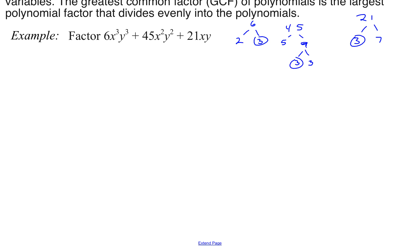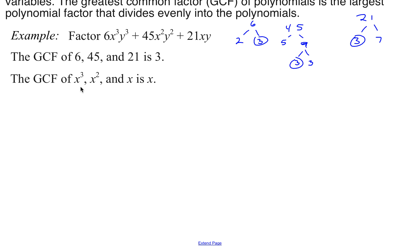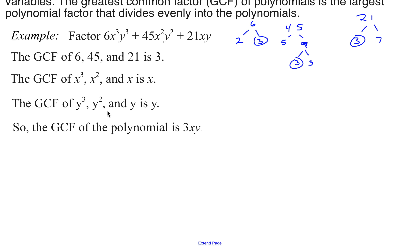What do you see that's common in all three of those terms? They all have a factor of 3, so that's the greatest common factor as far as the coefficients are concerned. Then if we look at the variables, they all have an xy in them. The greatest common factor of the x terms is x, and the greatest common factor of the y terms is y. So we multiply all of those together: 3xy is our greatest common factor.